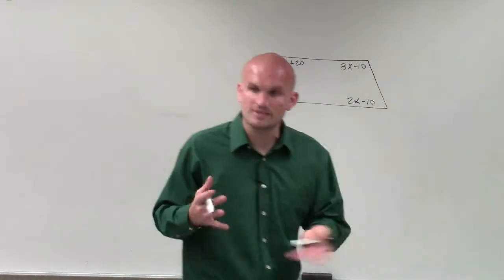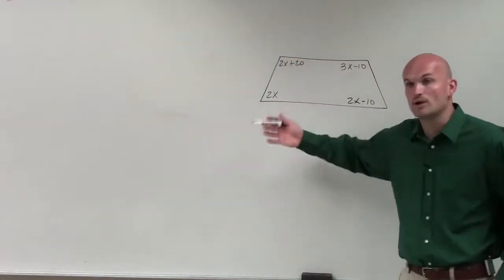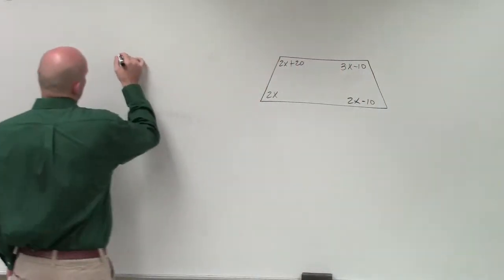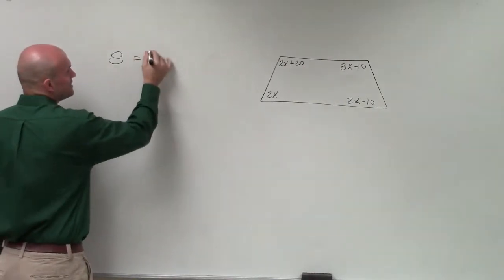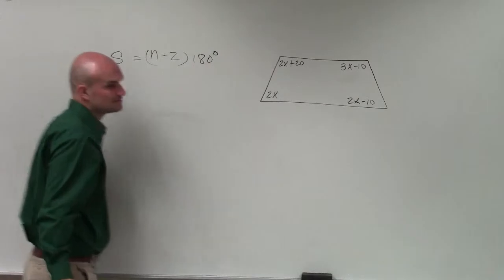So when defining the measure of that angle, what we're simply going to do is determine, well, what do all these angles add up to? Well, remember, we understood that the formula was the sum of all the interior angles is equal to n minus 2 times 180 degrees, right?